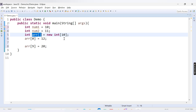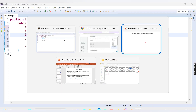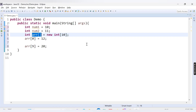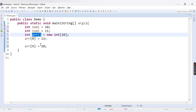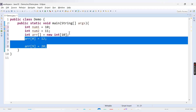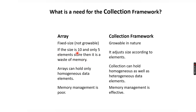That is why the array was introduced, but there are certain limitations to arrays. Arrays are of fixed size — you can only store as many values as the defined size. But with collections, they are growable in nature; we don't need to fix the size. As per the values added, the collection will grow by default. If the array size is 10 and only two values are stored, the remaining eight positions represent a waste of memory. But collections adjust size according to elements, so there is no wastage of memory.